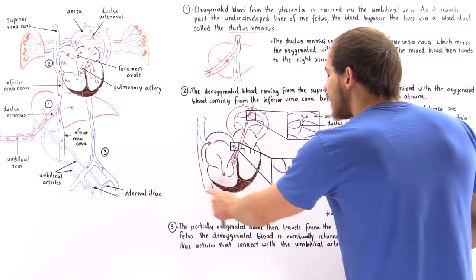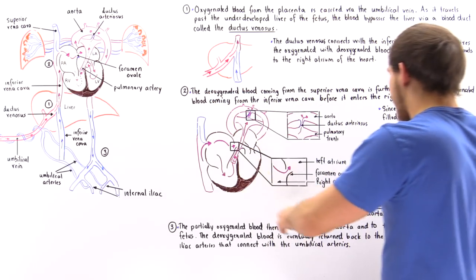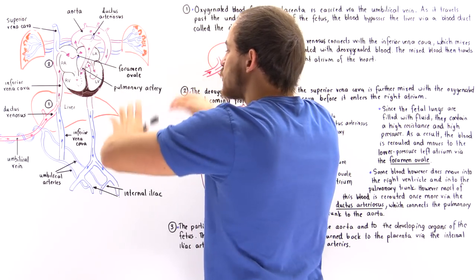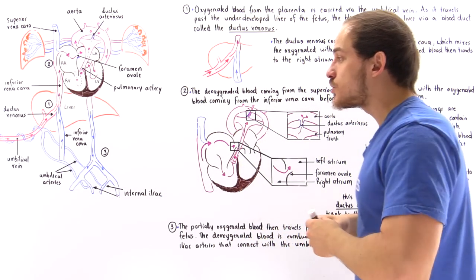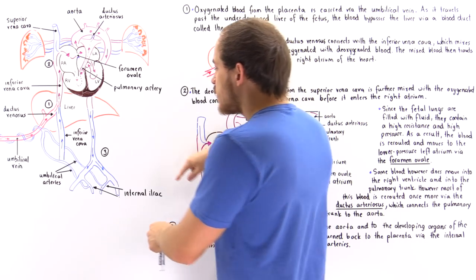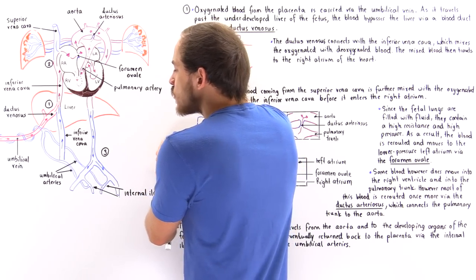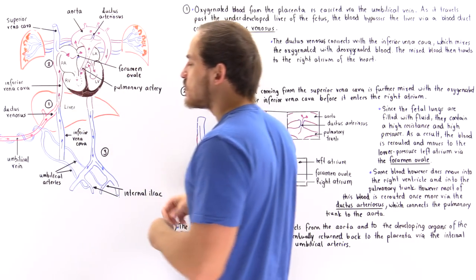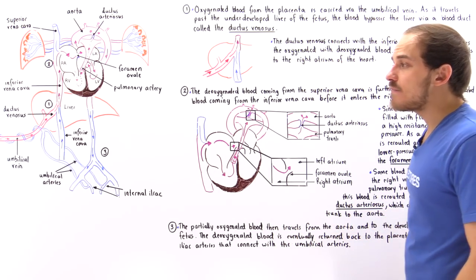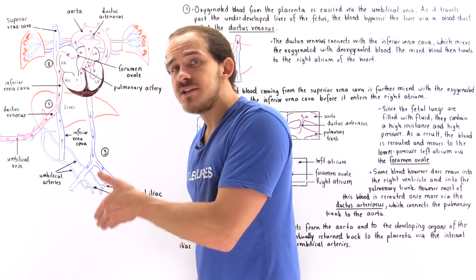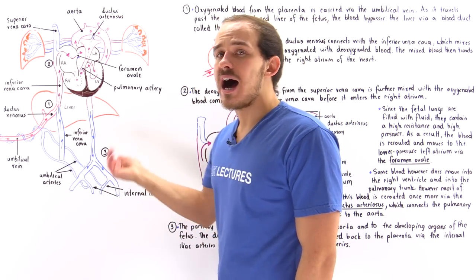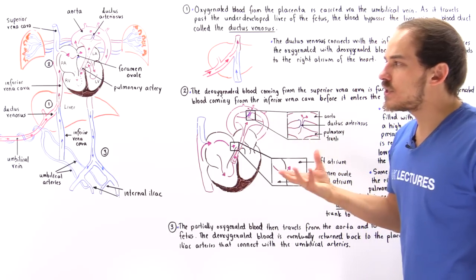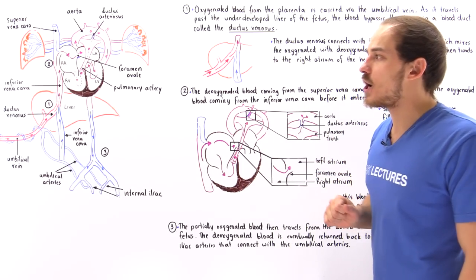Once the partially oxygenated blood travels into the aorta, it begins to move into the tissues and organs found in the upper and lower portions of the fetus. Eventually the deoxygenated blood enters the internal iliac arteries, which connect with the umbilical arteries, and that carries the deoxygenated blood back into the placenta. Inside the placenta, the blood is oxygenated again and nutrients flow into that blood, completing the cycle.